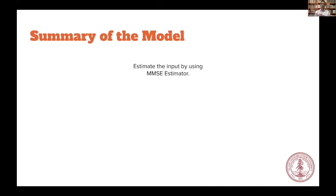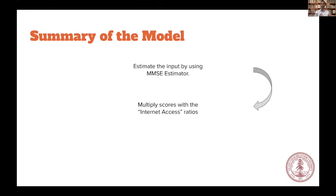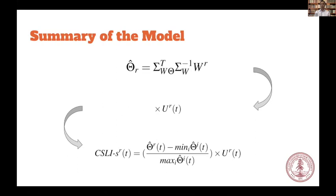The main insight is that the MMSE estimator allows us to incorporate the correlation and covariance values of the popularities to determine the value of searching that topic on the internet. For example, if a particular topic has a lot of covariance compared to different regions, this estimator chooses that topic as a valuable one that helps explain how differentiating it can be to compare countries. Once we have this estimation, we multiply the scores with internet access ratios, then map all the scores between zero and one for easier comparability among different years. For the mathematical background, please refer to our paper.